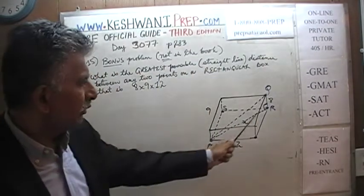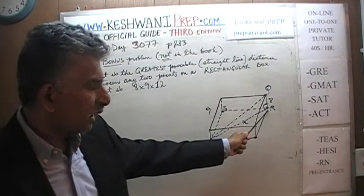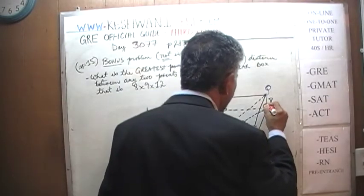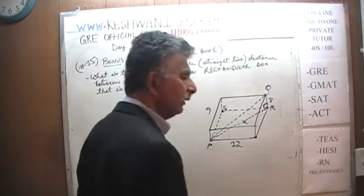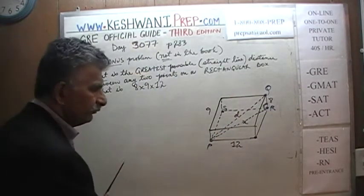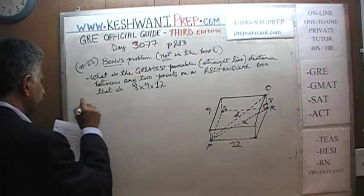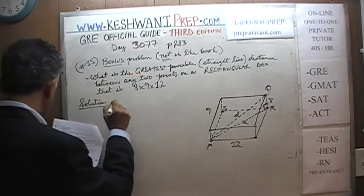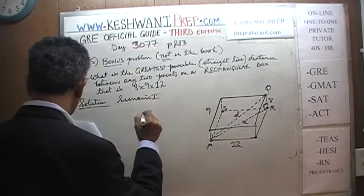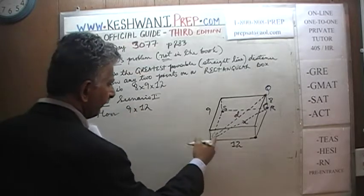Once we have this diagonal P to R, we'll apply the Pythagorean theorem one more time to the triangle PQR, which is also a right-angle triangle — 90 degrees at point R. We'll look for the distance PQ and let's call it D for the diagonal. So here's scenario one, where we have the floor of 9 by 12.